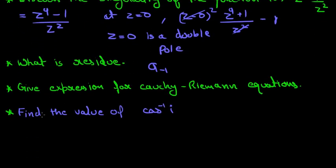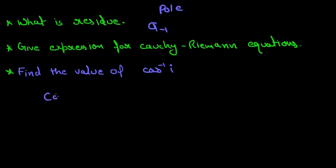So now, you have to find the value of cos⁻¹(i). So now, to solve this, it's really simple. cos⁻¹(i) is equal to x, let's take it as x. So, i is equal to cos x.